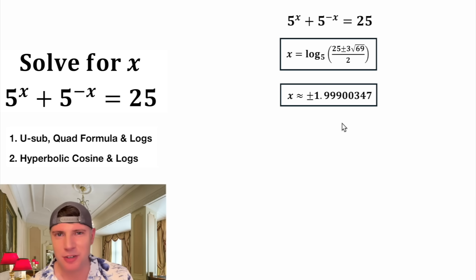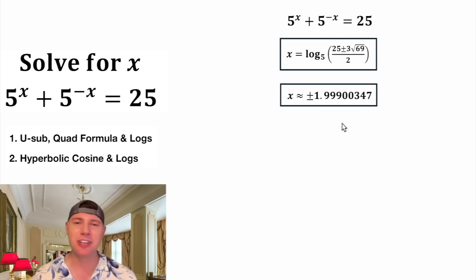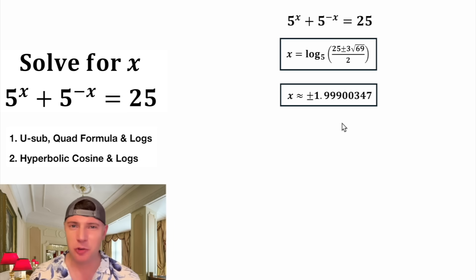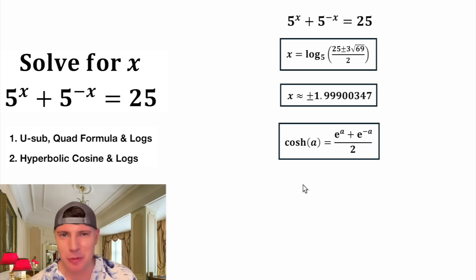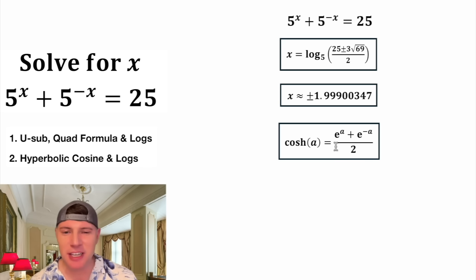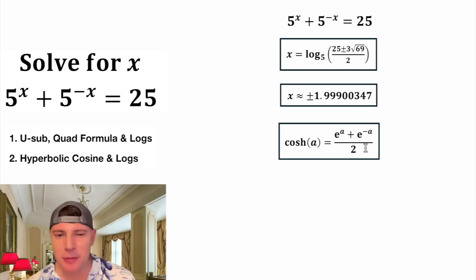You're most likely going to solve it this way. I just want to show you what it would look like if you did hyperbolic cosine. Here are the notes: hyperbolic cosine of a is equal to e to the power of a plus e to the power of negative a, whole thing over 2.